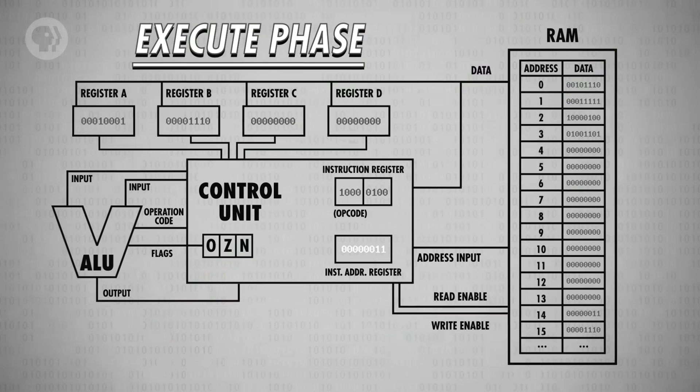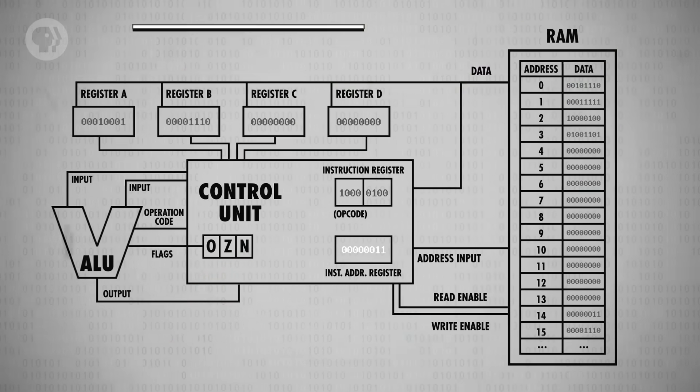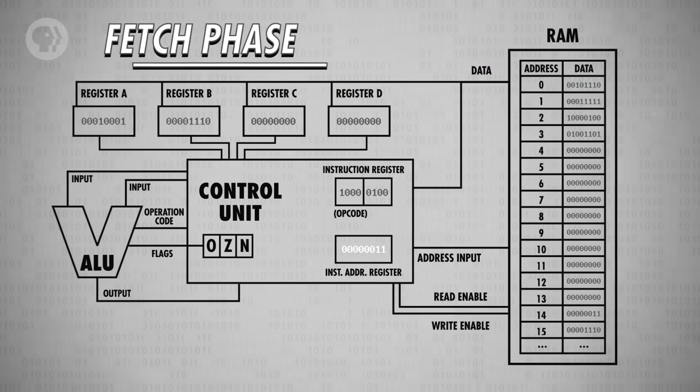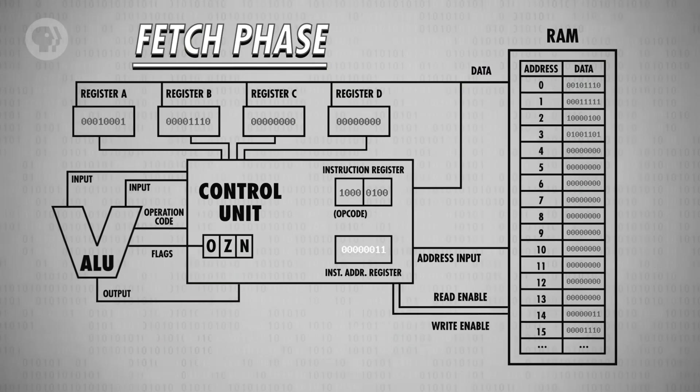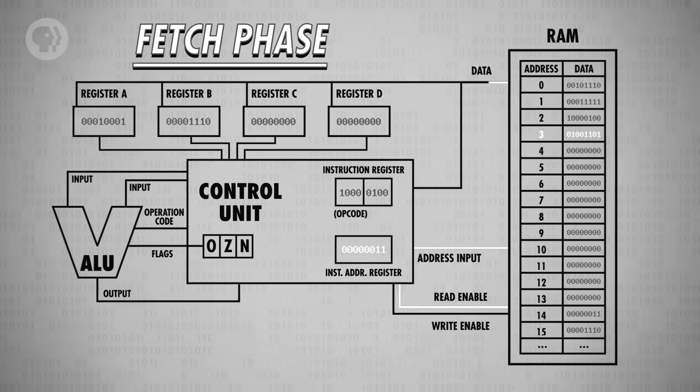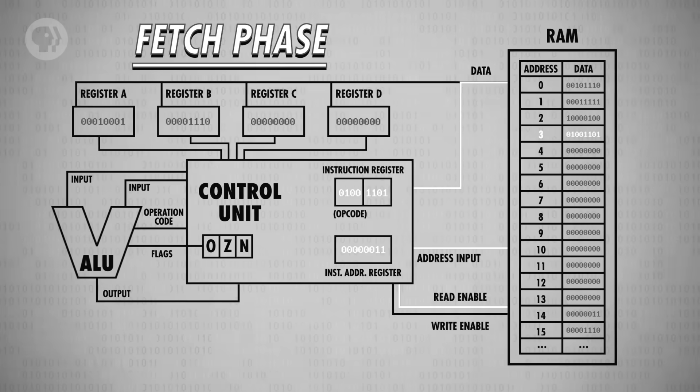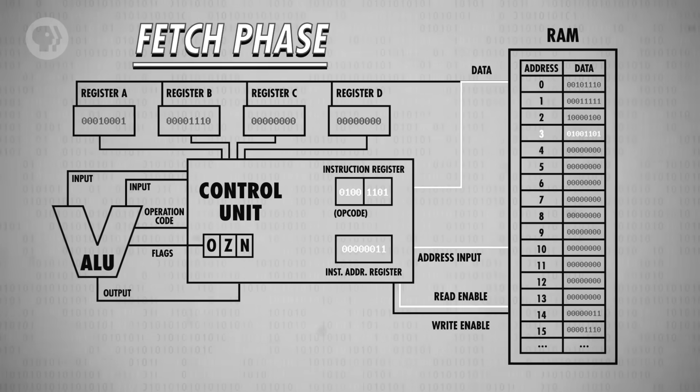You might remember in episodes 7 and 8 that we stepped through some simple example programs for the CPU that we had created. For simplicity, we just waved our hands and said that the program was already magically in memory. But in reality, programs have to be loaded into a computer's memory. It's not magic, it's computer science!